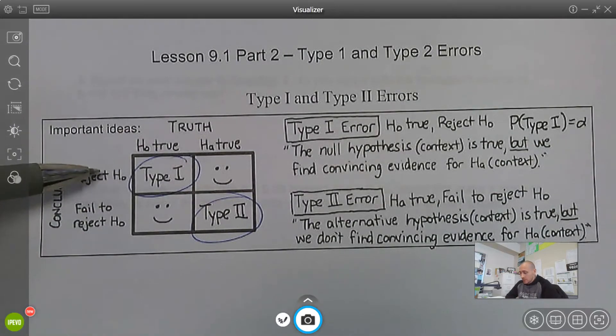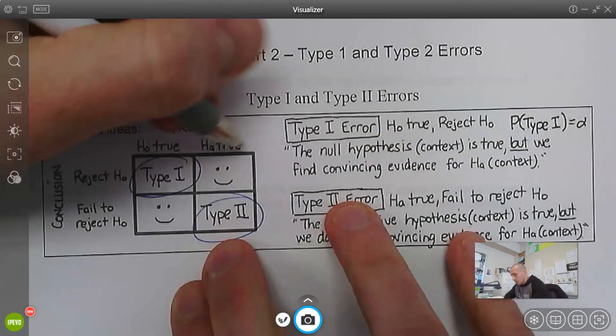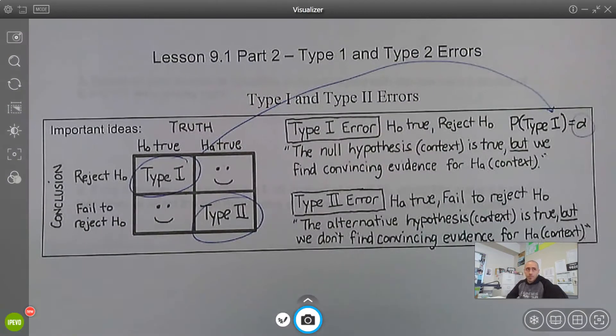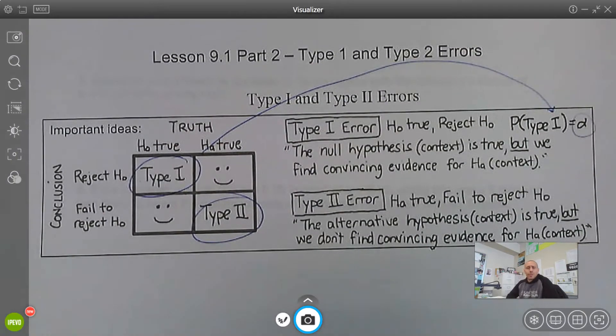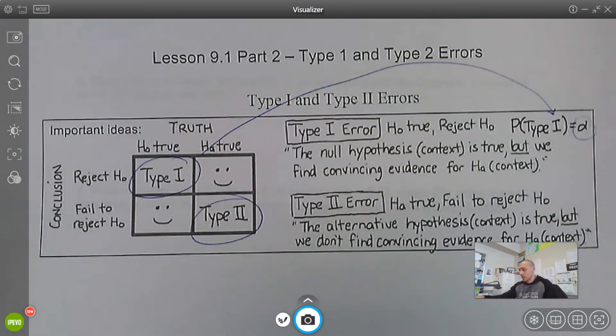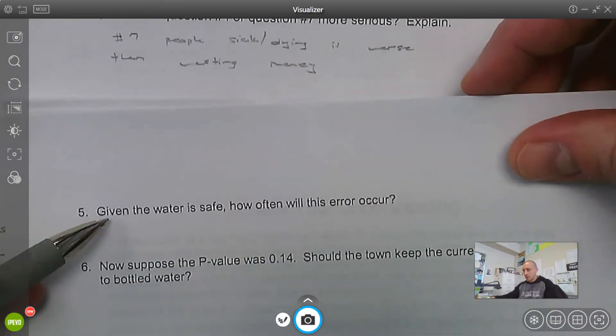If the null is true but we reject it, that is a Type 1 error. And the probability we make a Type 1 error is alpha, not sigma, alpha, whatever your significance level is. Typically 5%, so there's a 5% chance that you make a Type 1 error. And that's really what they were asking back in number 5.